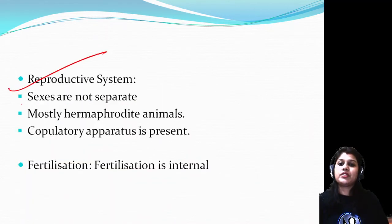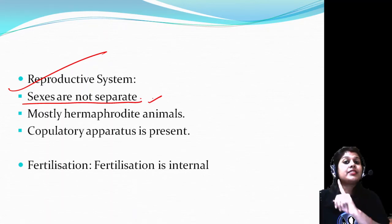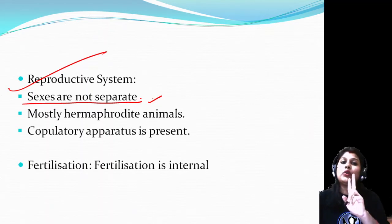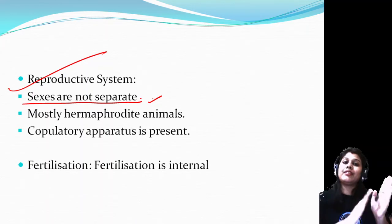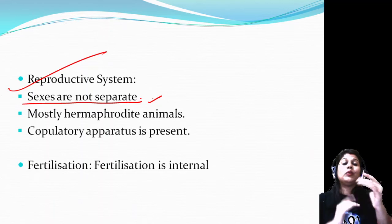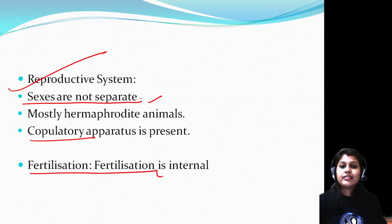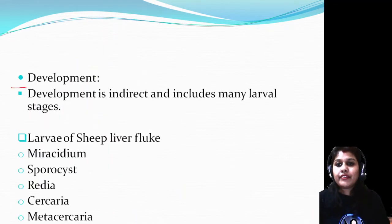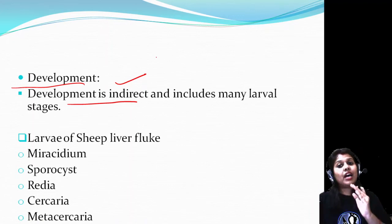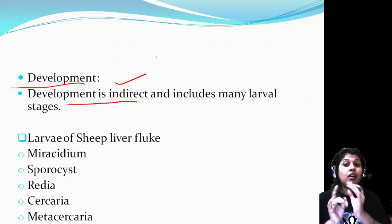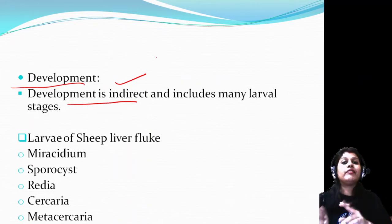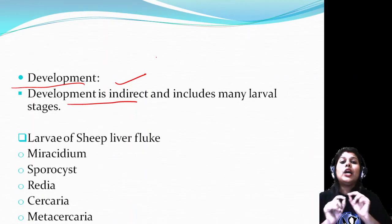Reproductive system: sexes are not separate - they are hermaphrodite animals. One body has both male and female organs. Copulatory apparatus is present. Fertilization is internal. Development is indirect, meaning there are larval stages. With the help of these larval stages, the full adult forms. If development were direct, there would be no larval stages.